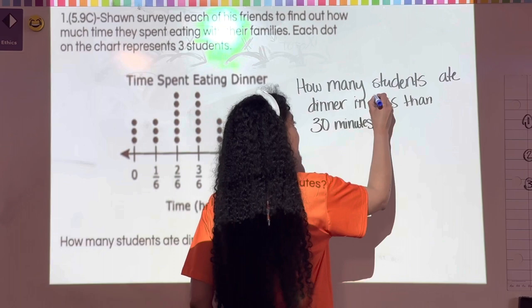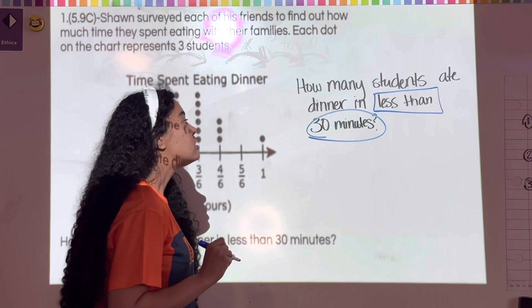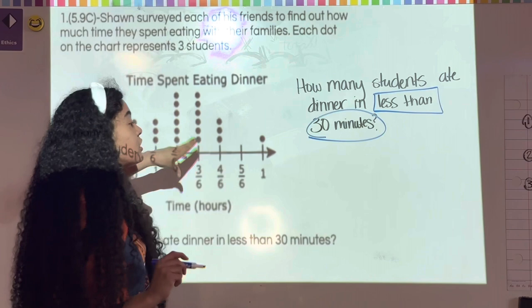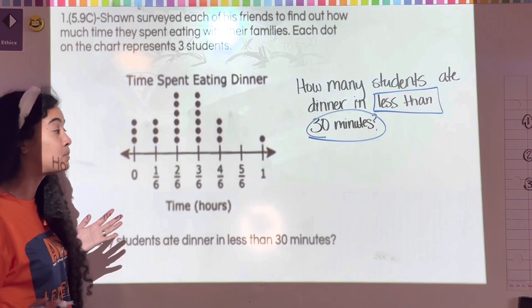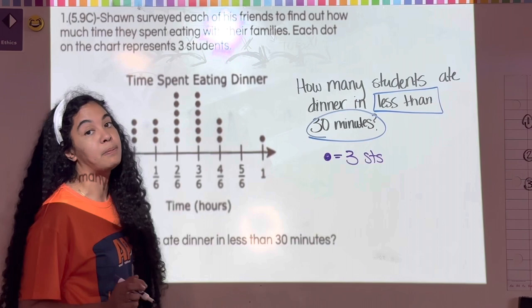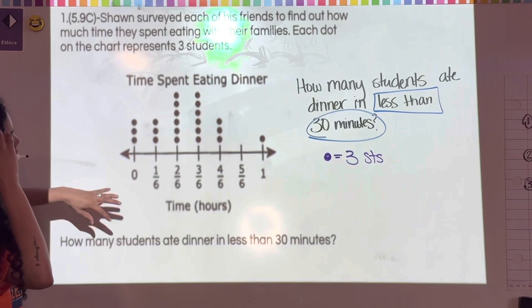I want you to box 'less than' and circle '30 minutes.' We also need to note that each dot on the chart represents three students — that's the key. They didn't give it to us the way it normally looks, but it matters. So I'm going to write: dot = 3 students.